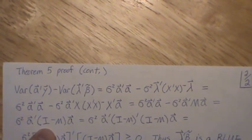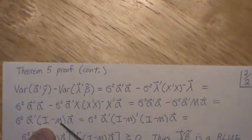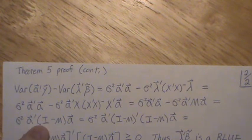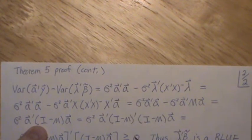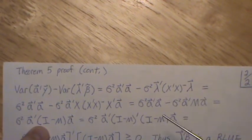I minus M is a perpendicular projection matrix onto the orthogonal complement space of the column space of X, so it's idempotent and symmetric. We can multiply this times itself and we can add a tick, and the transpose or tick doesn't change it because it's symmetric.